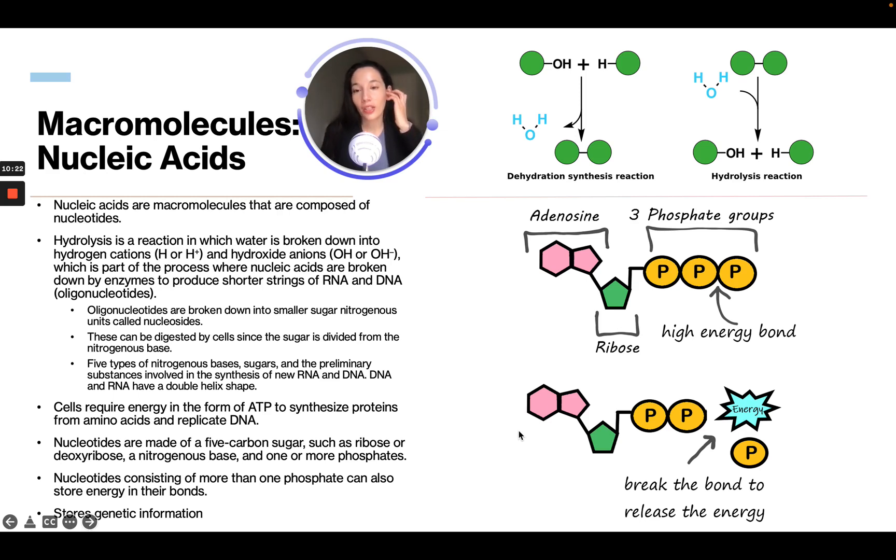Cells require energy in the form of ATP to synthesize proteins from amino acids and replicate DNA. Nucleotides are made up of five carbon sugars such as ribose or deoxyribose, a nitrogenic base, and one or more phosphates. Nucleotides consist of more than one phosphate and can also store energy in their bonds. They store genetic information.